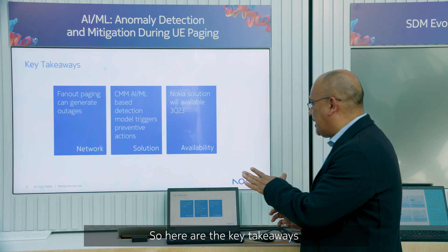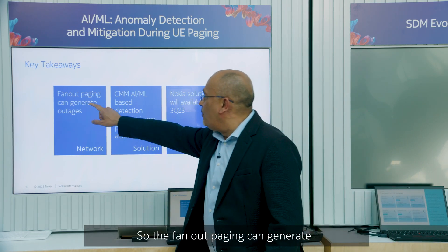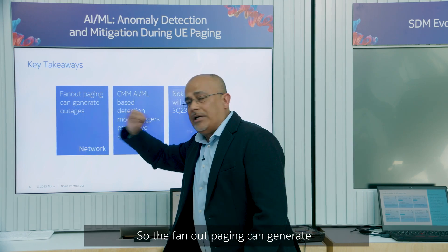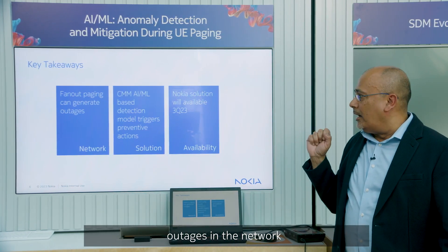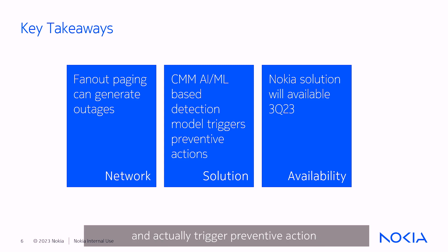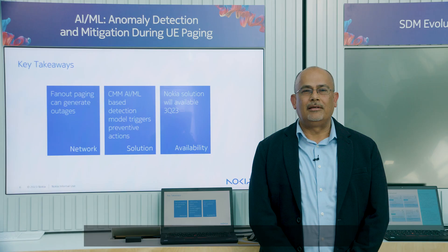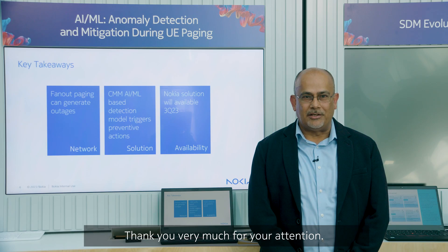Here are the key takeaways: fanout paging can generate outages in the network, and our AIML-based detection model can detect these anomalies and trigger preventive action from the CMM. This solution will be available in Q3 2023. Thank you very much for your attention.